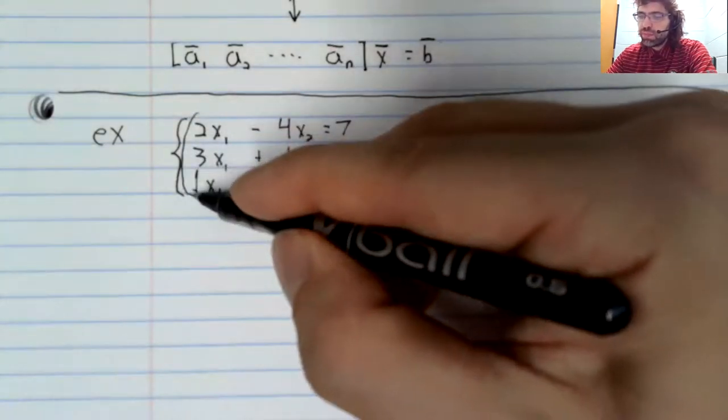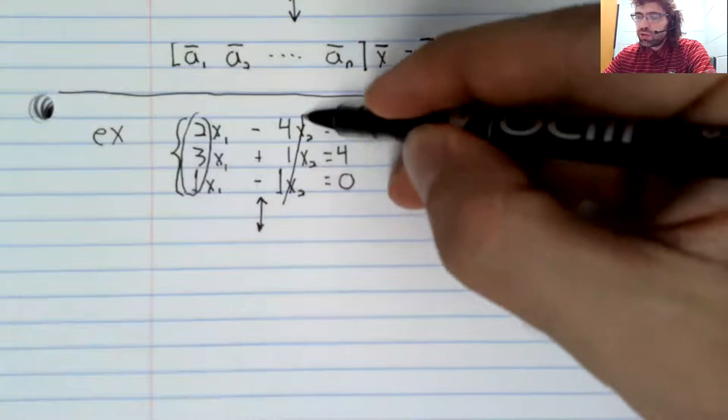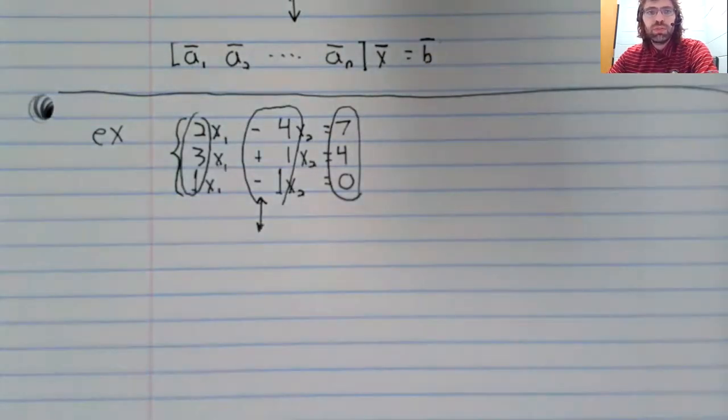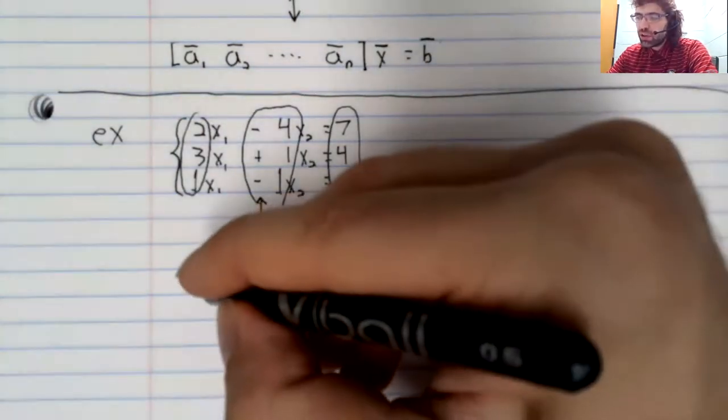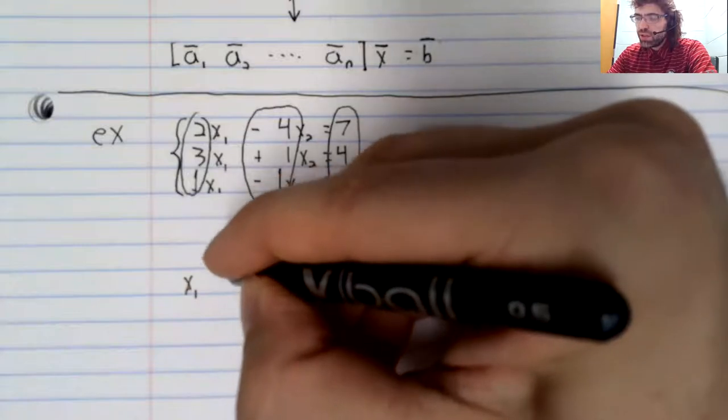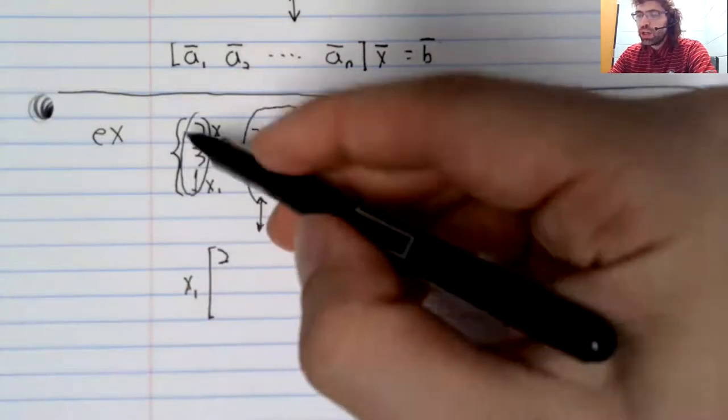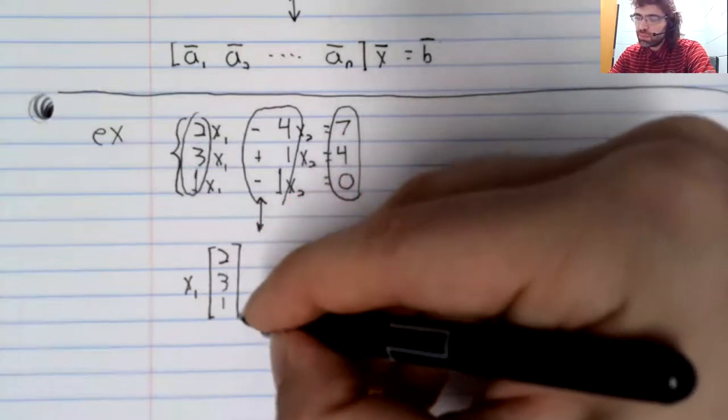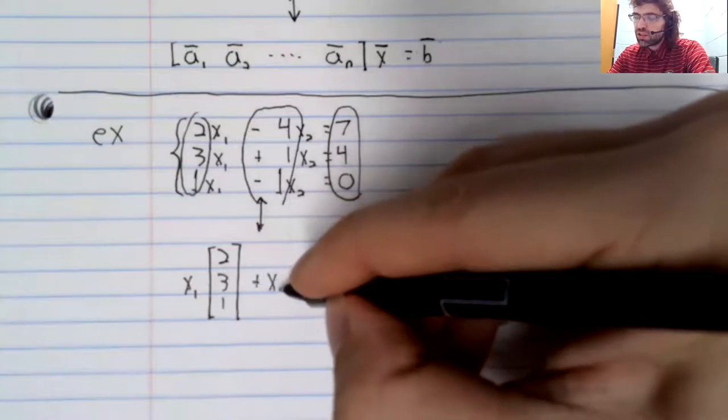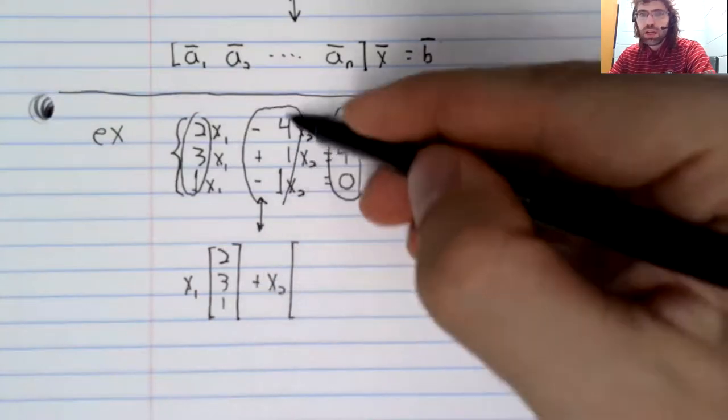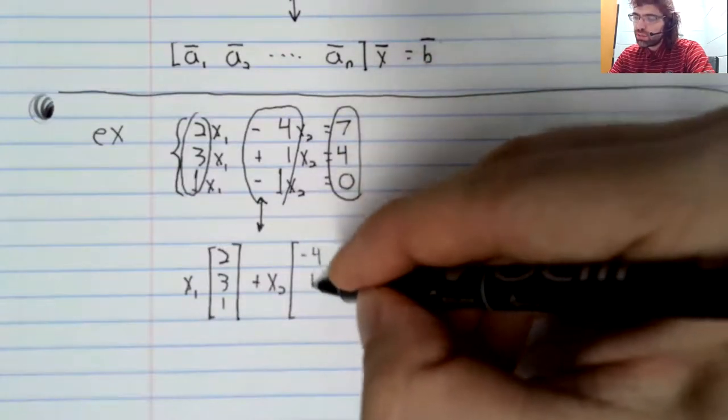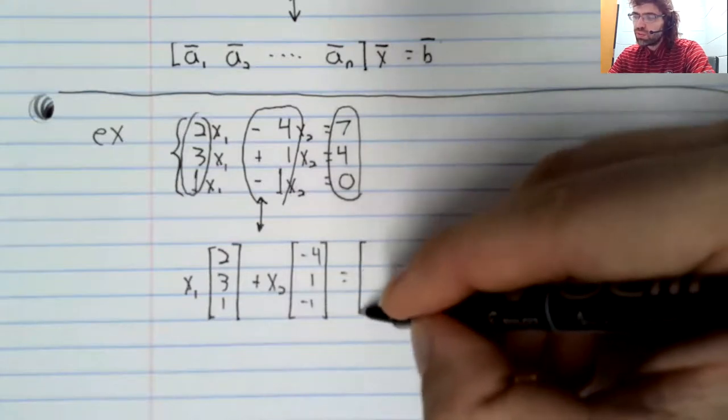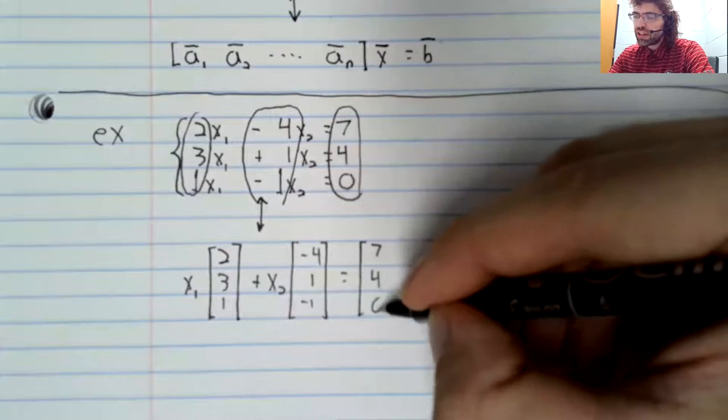In particular, if you take these numbers, these numbers, and these numbers, and you make vectors out of them, the vector equation x1 times this vector plus x2 times this vector equals this vector.